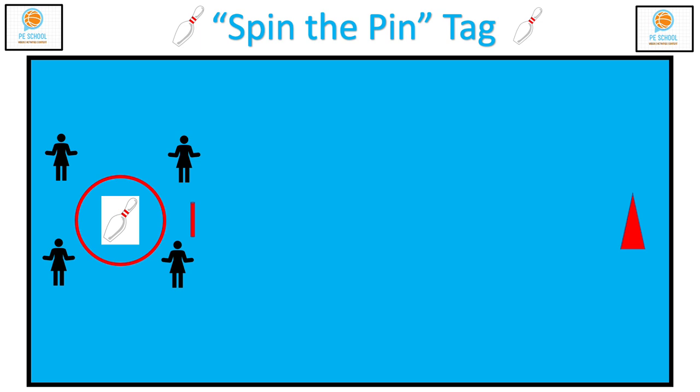Spin the Pen Tag is a very simple game to set up. You need groups of three to five students, and on one side of the gym, each group needs a hula hoop, bowling pin, and small pool noodle, with a cone on the opposite side of the gym that matches the hula hoop's color.